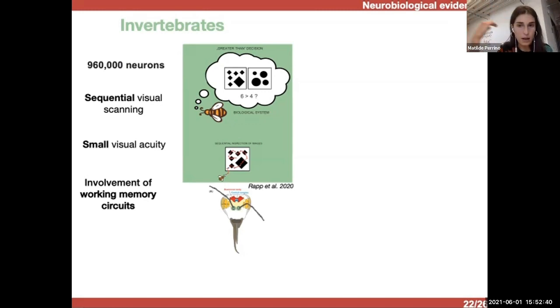And so, although there is no neurobiological information about where in the brain of insects, and in particular of bees that are the animal model most studied, the insect model most studied in these numerical tasks, we know that, for example, bees employ a sequential visual scanning. So, they process stimuli in a sequential order through active visual motor exploration. And this is proved by the fact that they fail in simple tasks when stimulus presentation is limited in time.